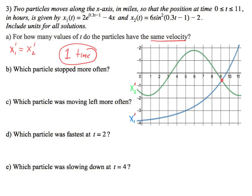If I'm looking for stopping, I want velocity equal to 0, which in this situation is the derivative of each function equaling 0. Looking at the first function's derivative, it equals 0 once — at about 9 point something. The green graph for x2 hits zero twice. So which particle stops more often? That would be x2, the green graph — it stops more often because the velocity equals 0 more times.